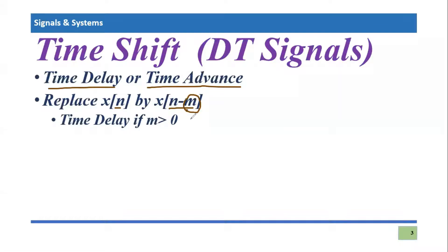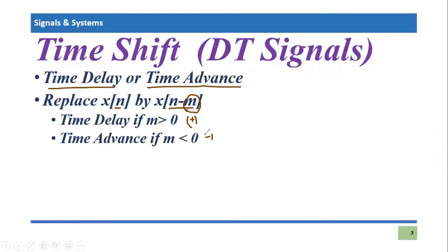The signal will be time delayed if m is greater than zero, i.e., positive, because a positive m means an increment in the time domain, so the resulting signal will appear delayed or much later than its original position. If m is less than zero, m is negative, meaning a decrement in the time domain, so the signal will appear much before its original position — this is time advance.